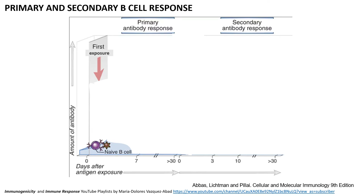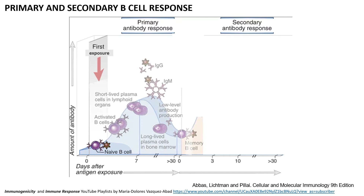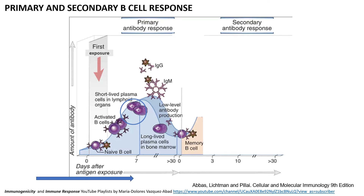For the primary and secondary B-cell responses, I'm going to show this cartoon taken from Abbas, Lickman, and Pillai — I highly recommend their publications and available seminars. On a first exposure to an allergen, antigen, or immunogenic drug, the naive B-cell identifies the danger signal and becomes an activated B-cell with appropriate co-stimulation from T-cells. These activated B-cells will become plasma cells, which occurs anywhere between 5 and 15 days after exposure.